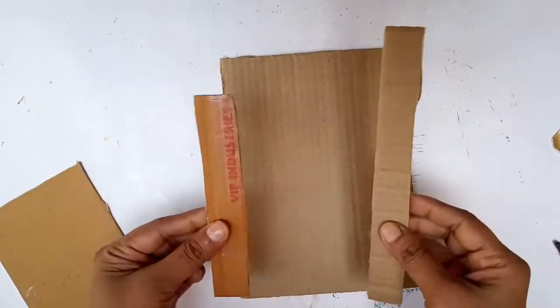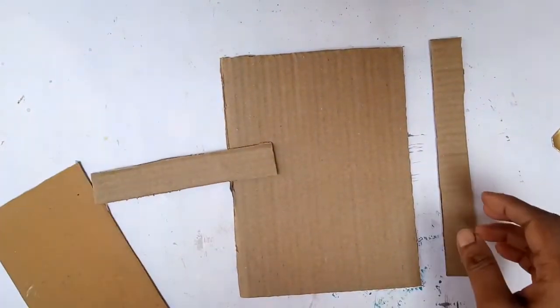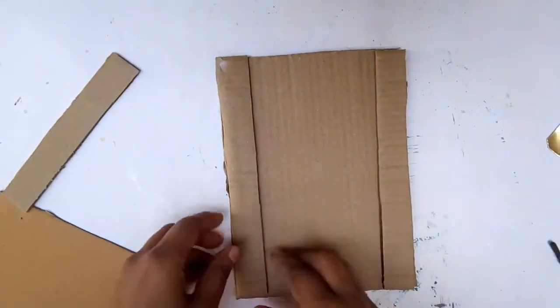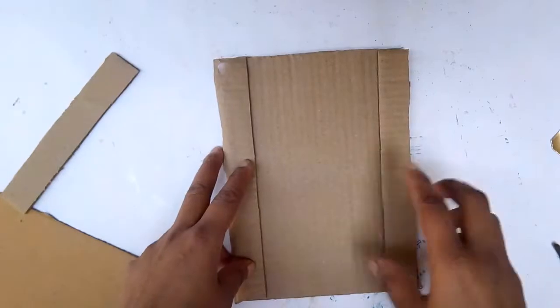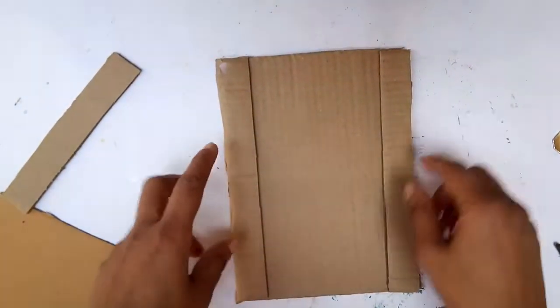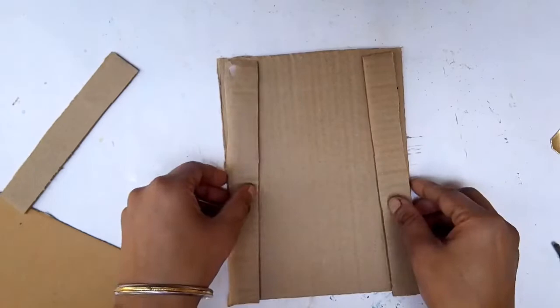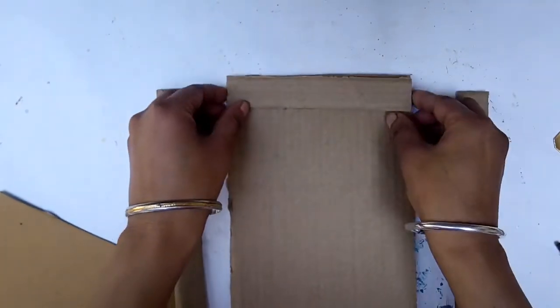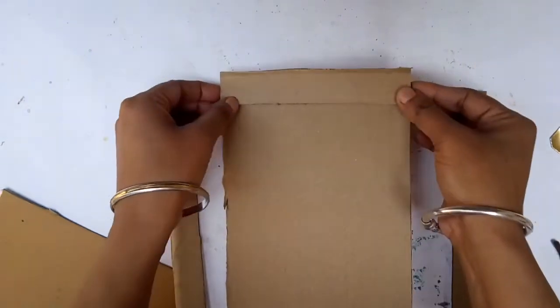Then I have cut out some thin strips of cardboard to form the frame of my door. These are approximately three-fourth of an inch wide, with two pieces the same length for the side frames, and a similar width and the same length as the width of this door.